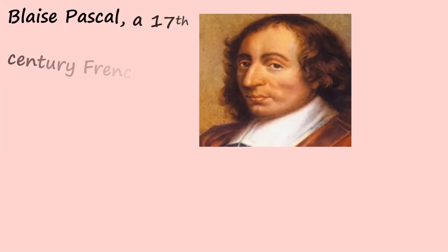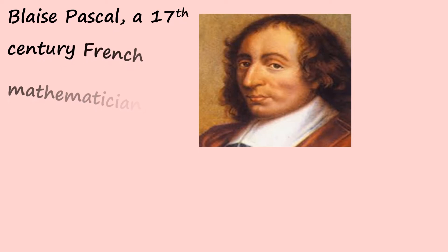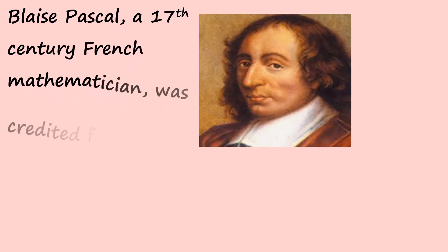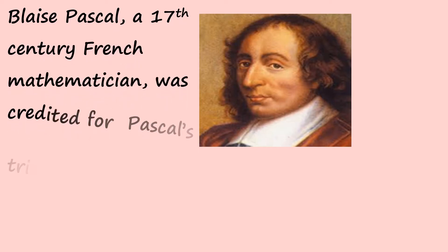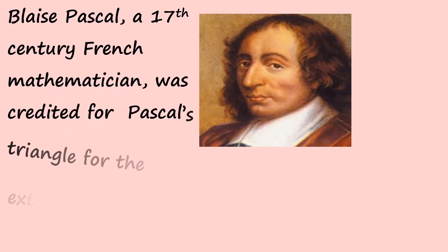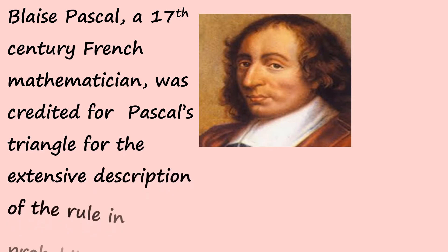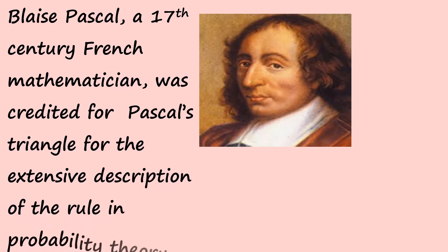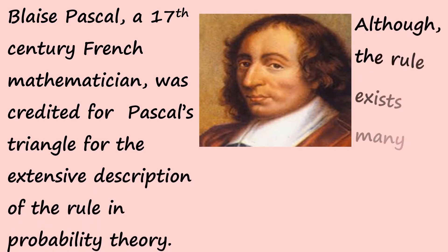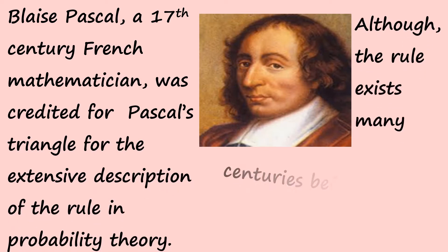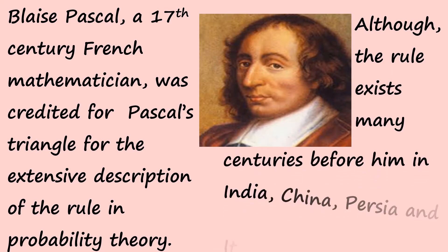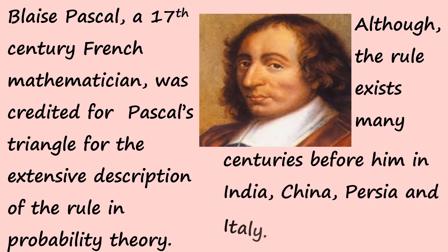Blaise Pascal, a 17th century French mathematician, was credited for Pascal's triangle for the extensive description of the rule in probability theory, although the rule existed many centuries before him in India, China, Persia, and Italy.